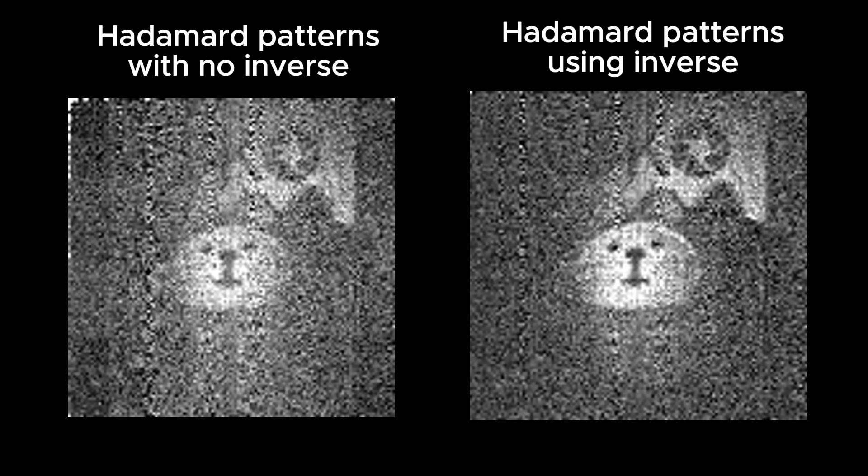Here's the scene reconstructed when using Hadamard patterns that only have 1s and 0s. And here's the result when subtracting the measurements with the inverse pattern. It's better, but a bit underwhelming. I think I'm still missing something here in the reconstruction.